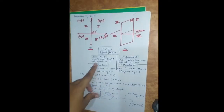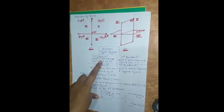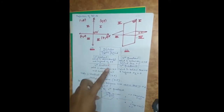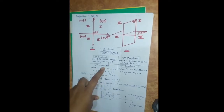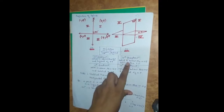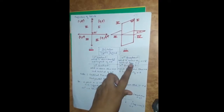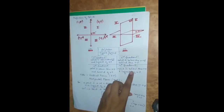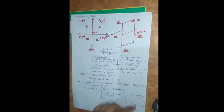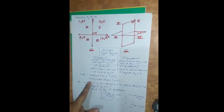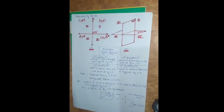To recap: for the first quadrant, the point is above the HP and in front of the VP. For the second quadrant, the point is above the HP and behind the VP. For the third quadrant, the point is below the HP and behind the VP. For the fourth quadrant, the point is below the HP and in front of the VP. Here, VP is the vertical plane and HP is the horizontal plane.